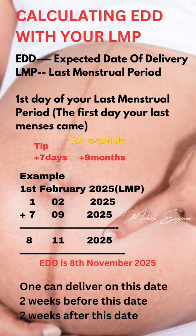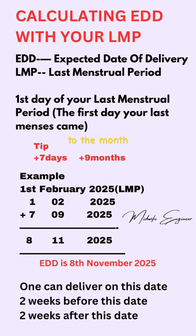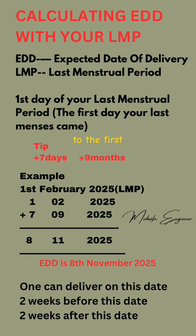So if, for example, it came on the 1st of February, 2025, the tip or the method is you add seven days to the day and you add nine months to the month. So 1st February, 2025 — February on the calendar chart is two, that is the second. So you just have to add the seven days to the first, making eight.